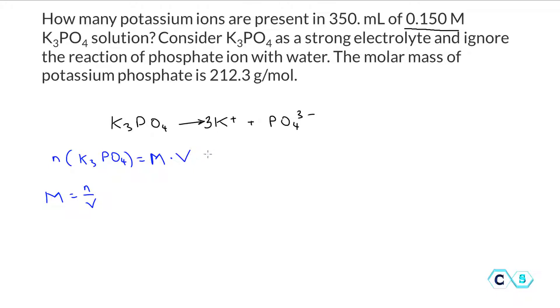From this formula I have 0.35 liters multiplied by 0.150 moles per liter. I can cancel the liters and this gives me 0.0525 moles of potassium phosphate.